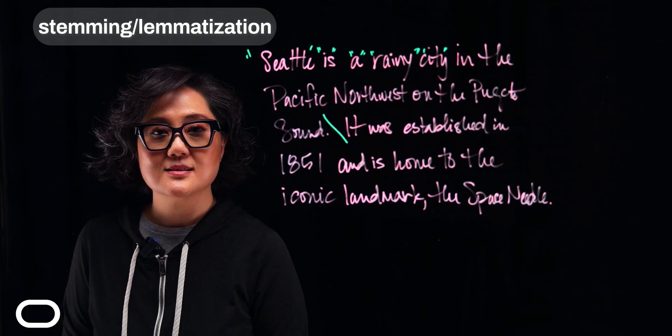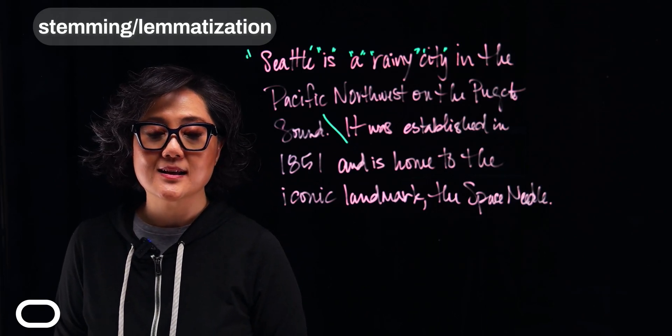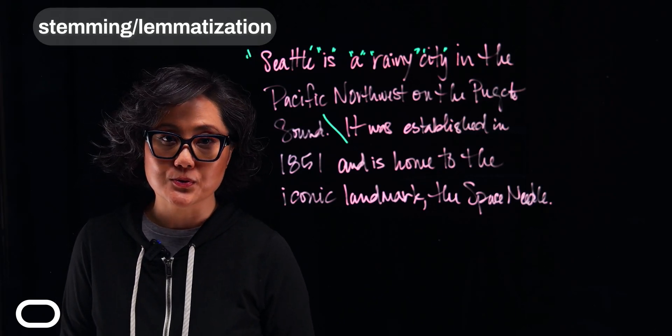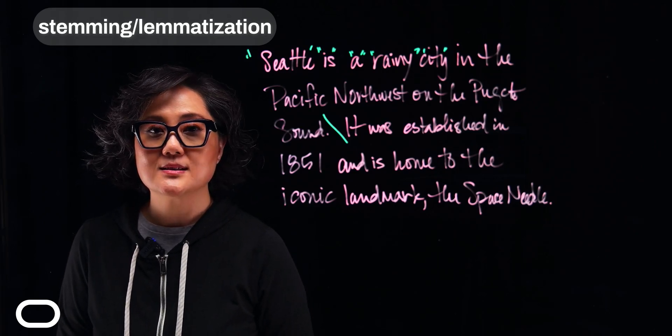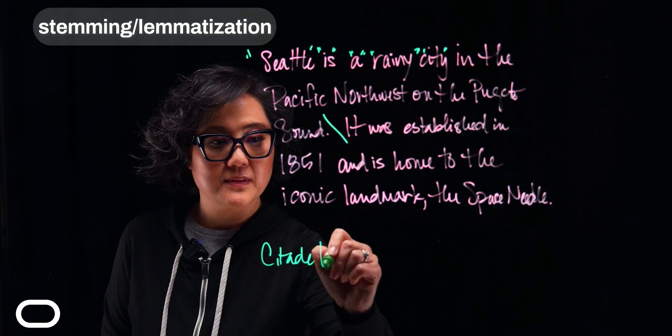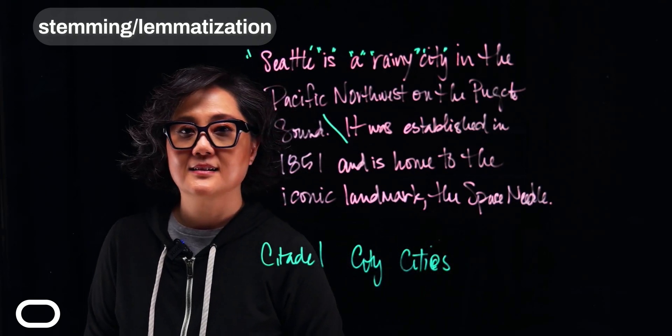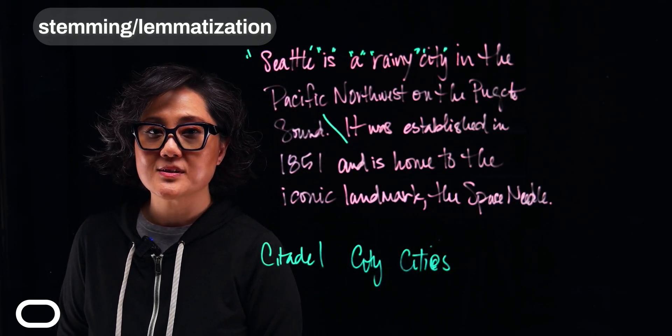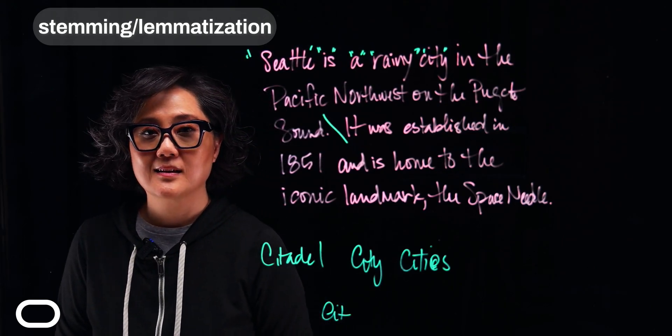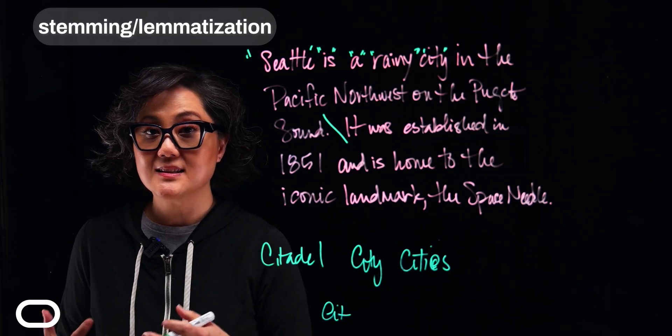Essentially, stemming chops off the last letters that are different, whereas lemmatization looks up the word in a dictionary to find its true root. For example, stemming might take the words citadel, city, and cities and reduce them to c-i-t, whereas lemmatization would reduce the words to the lemma civitas, which is Latin for city.